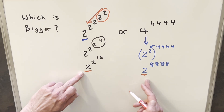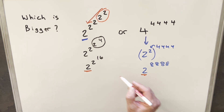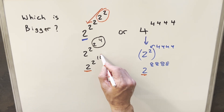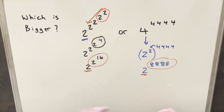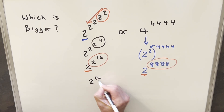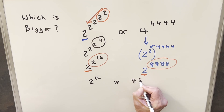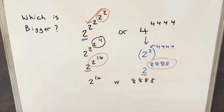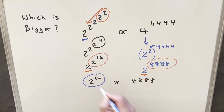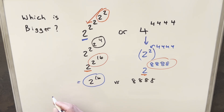Now again, we have the same base — 2 in both cases. So what we can really do is just compare exponents. We compare 2 to the 16th versus the number 8888. At this point, it might be obvious — you might already know the value of 2 to the 16th. This is actually a pretty common value in computer science, so some people just remember this number. But let's break it up and try to show it a little more carefully.